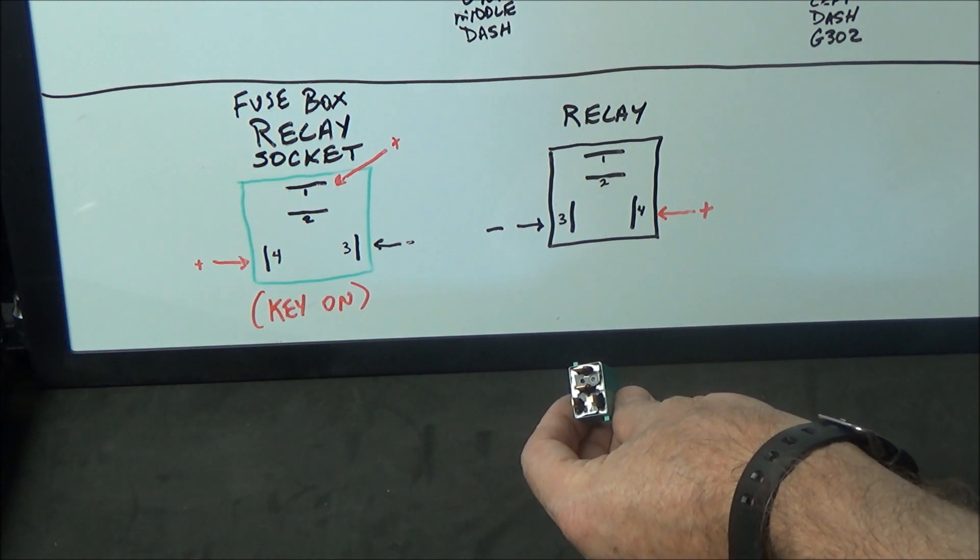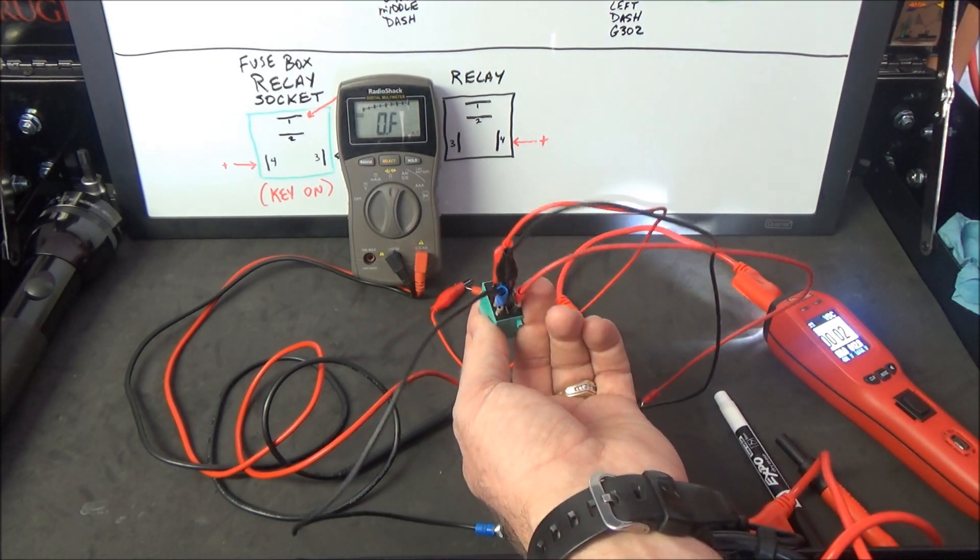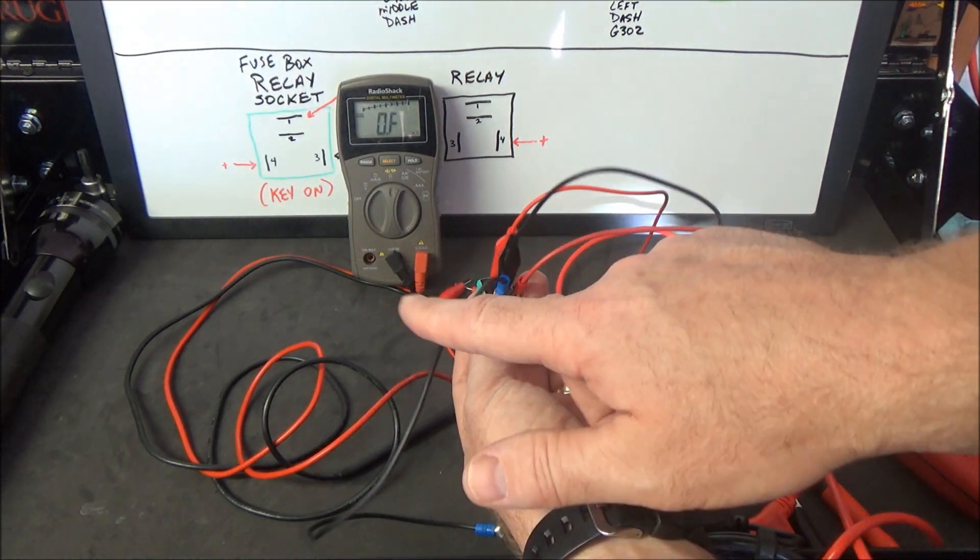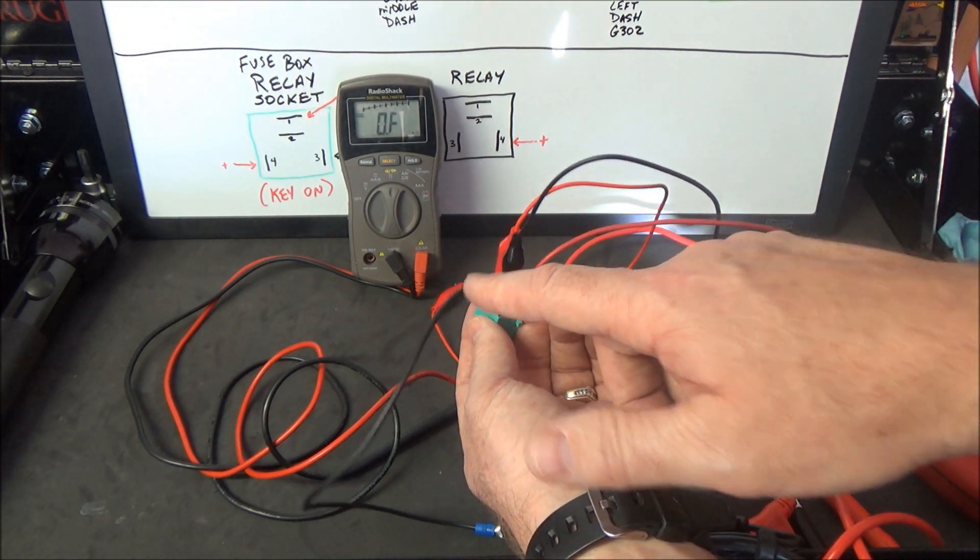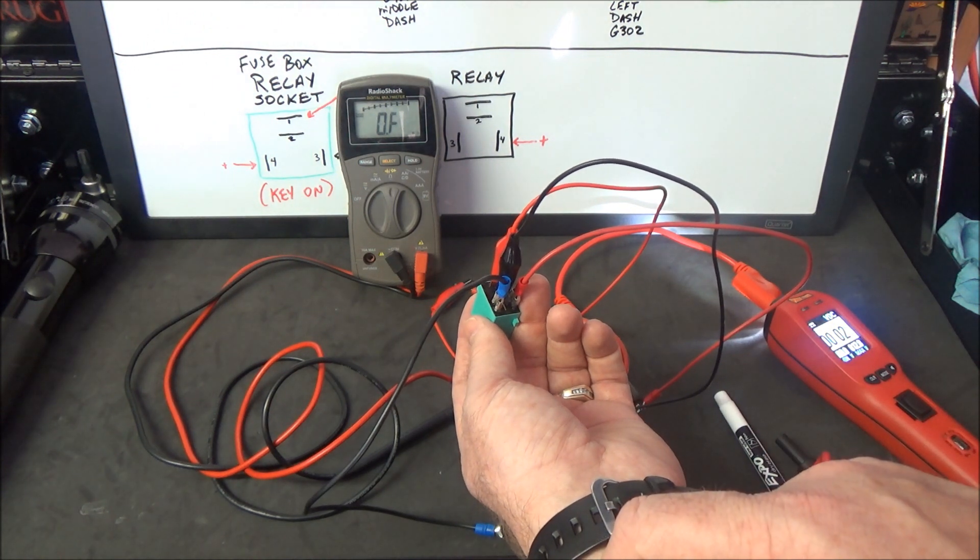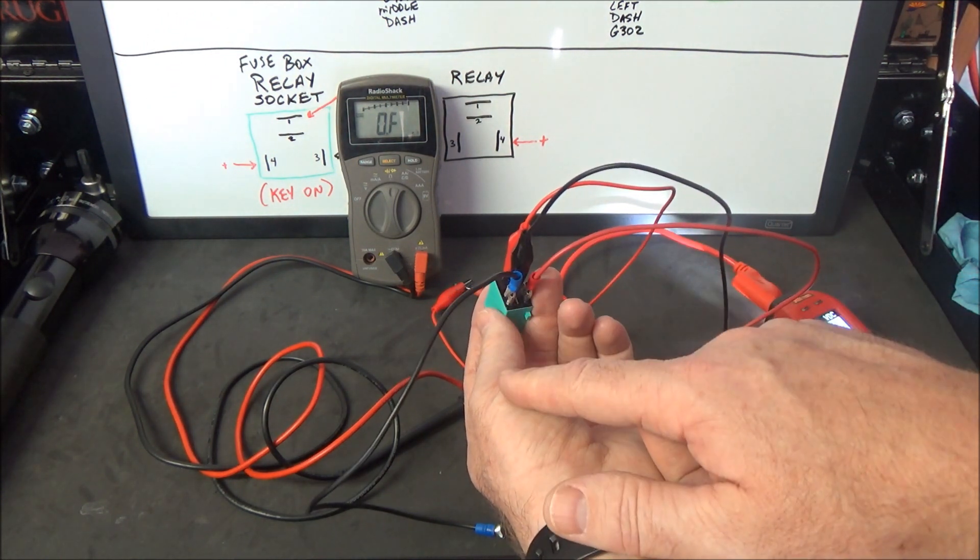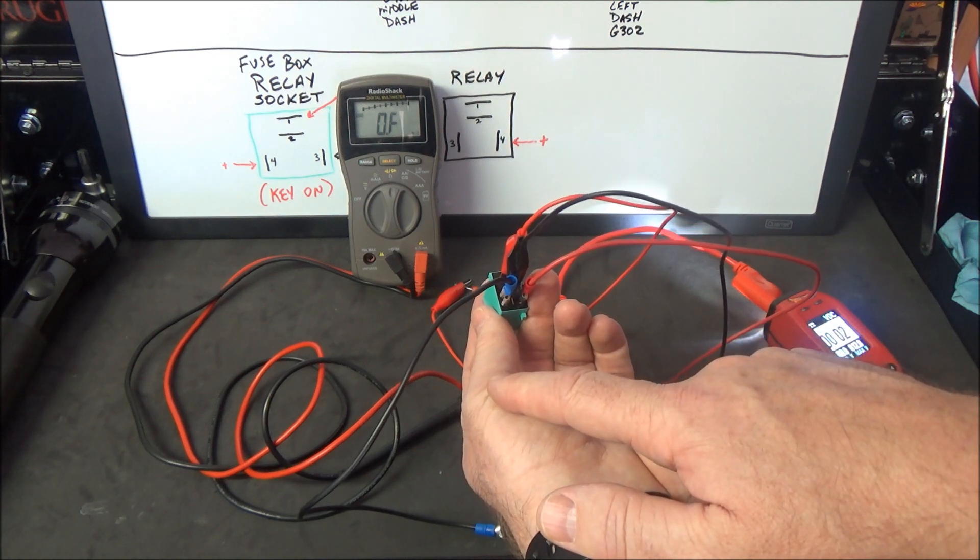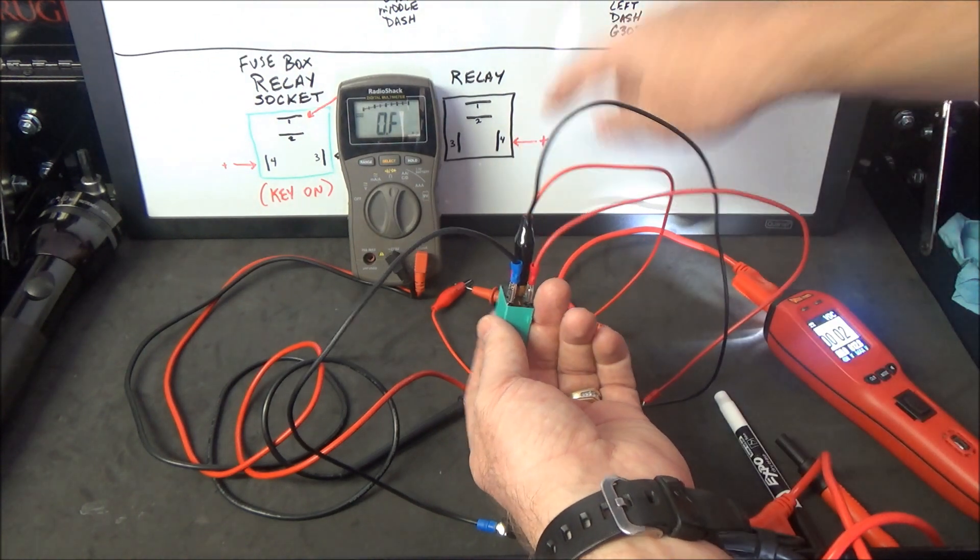I have the test set up. I have power and ground already connected—I'm using my power probe to supply the power and the ground. You can just as easily use jumper wires on your battery to supply power and ground to your relay. Just remember to use fuses if you're going to do that so you don't fry anything. I have the power connected to pin four and the ground connected to pin three.